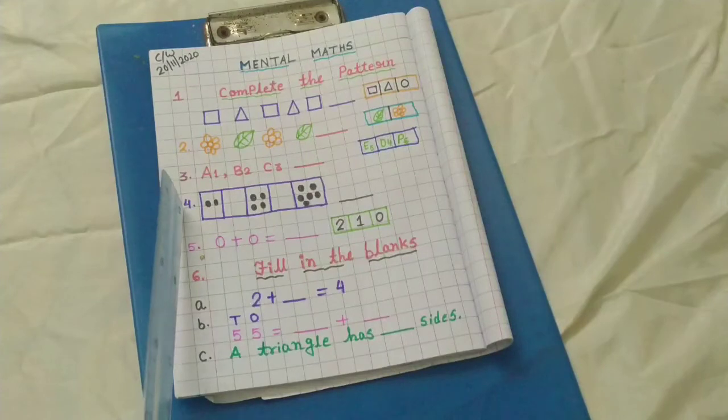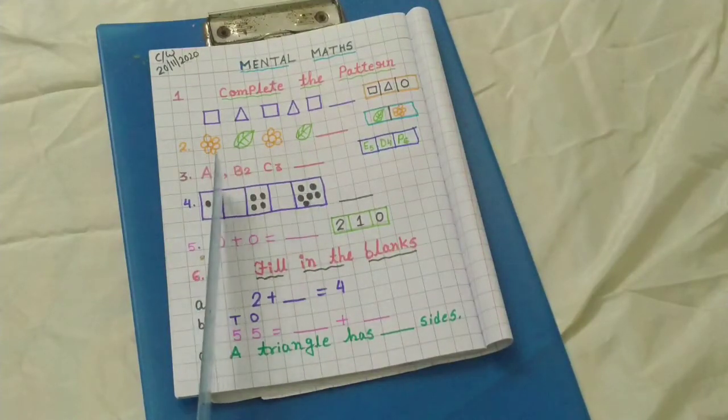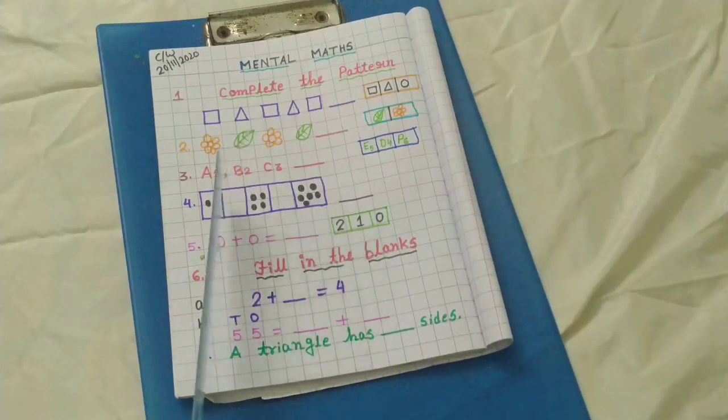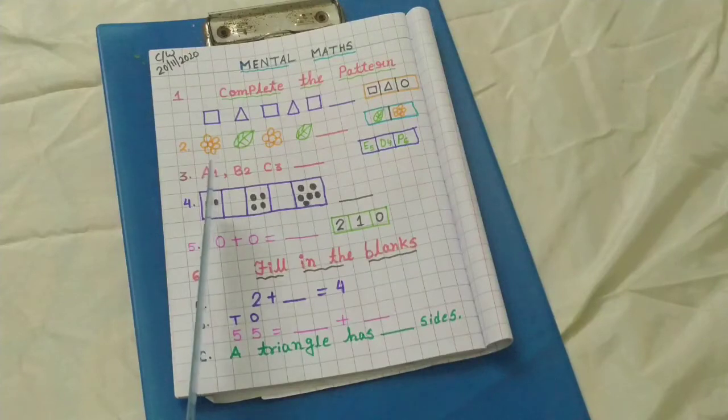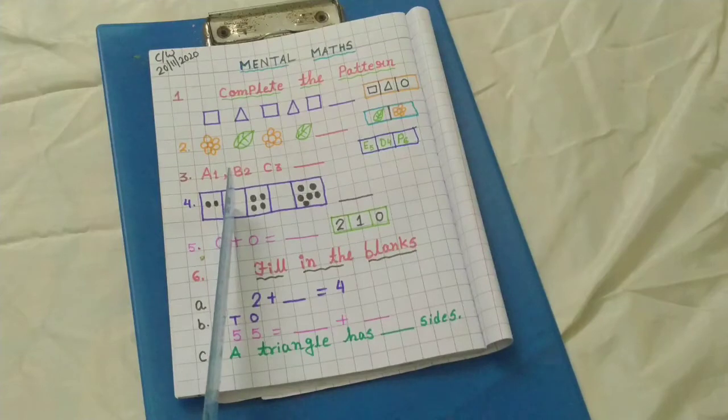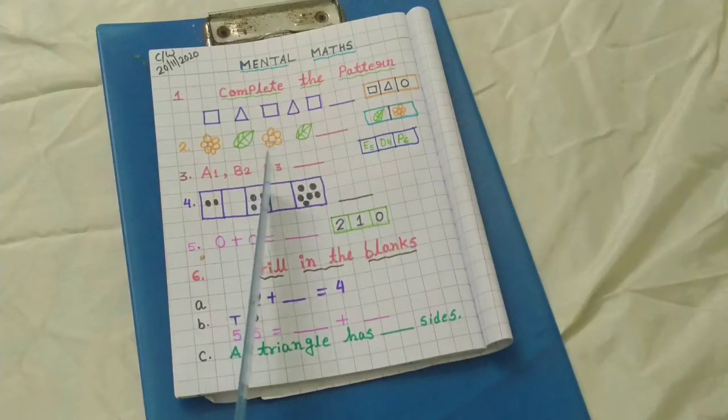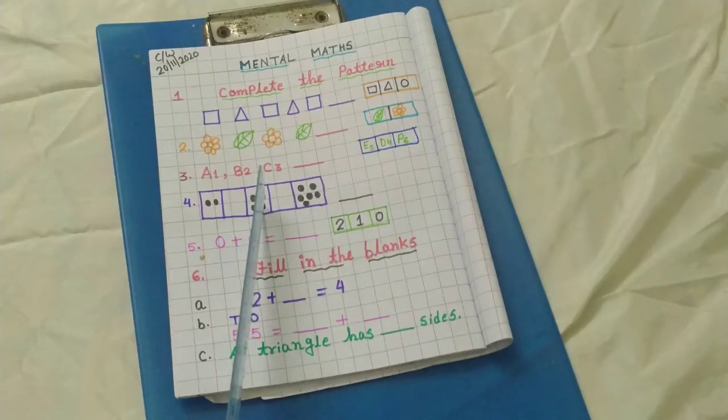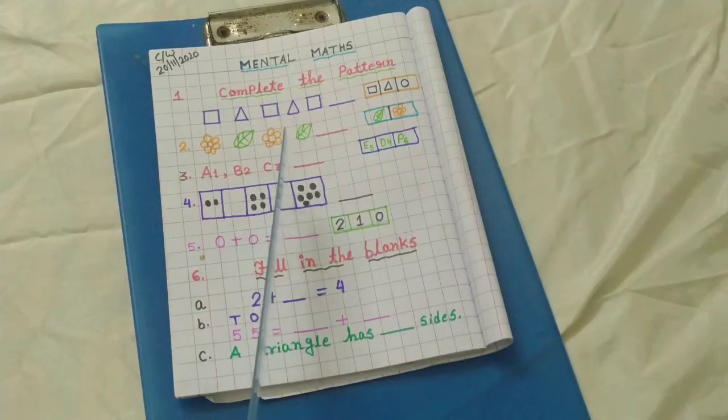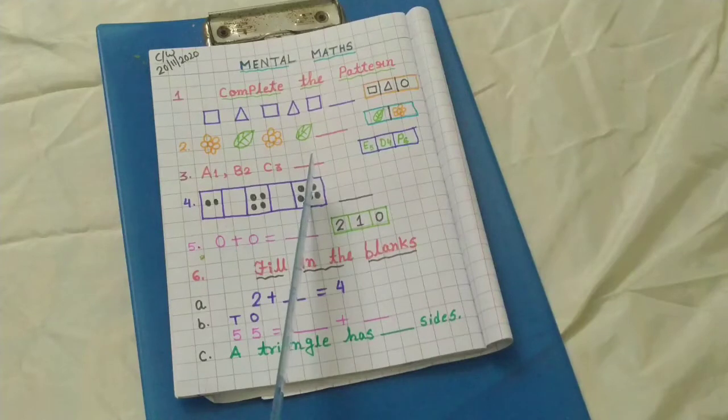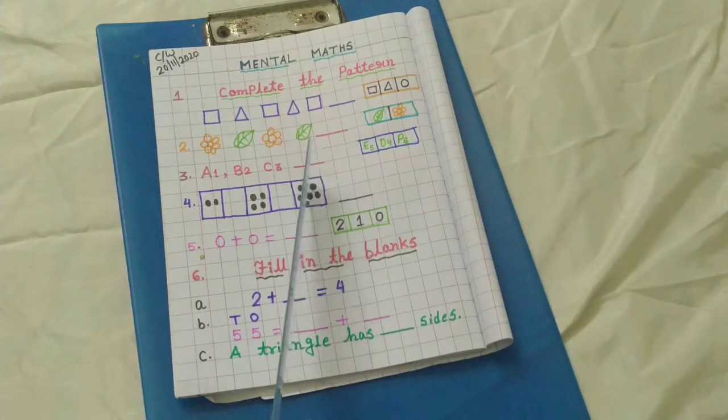Number 4. Here you can see 1, 2, 3, 4, 5 boxes are there. In the first box I have drawn two black dots. The second box is empty. In the third box I have drawn one, two, three, four black dots. Again, the fourth box is empty. And in the fifth box I have drawn one, two, three, four, five, six black dots.